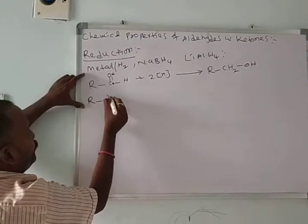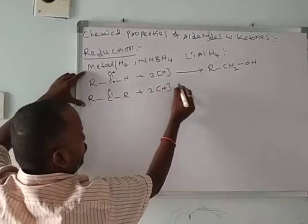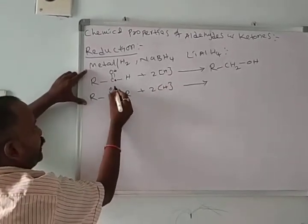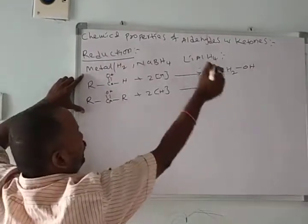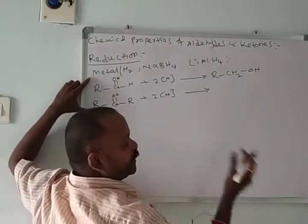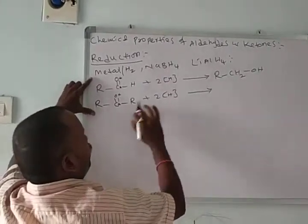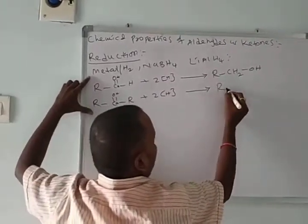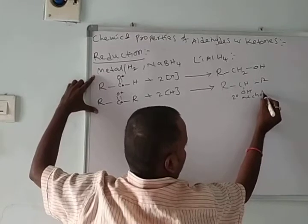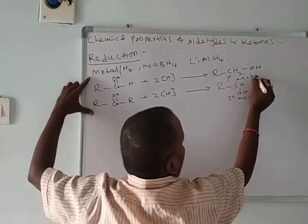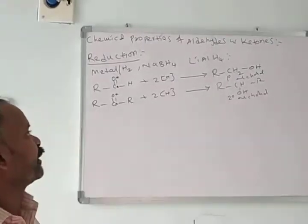If you take ketones, two nascent hydrogens are added — one hydrogen to carbon, another to oxygen — in the presence of the same reagents: metal hydrogen (tin, zinc, palladium, platinum), forming R–CH(OH)–R′. This is called secondary alcohol. So we get primary alcohols by reduction of aldehydes, and secondary alcohols by reduction of ketones.